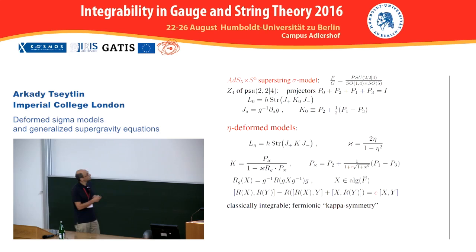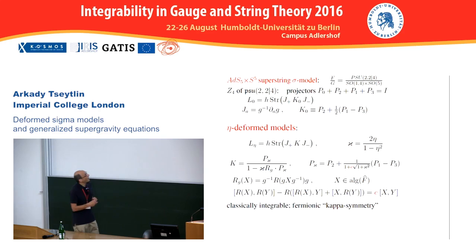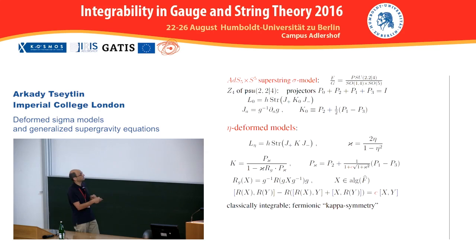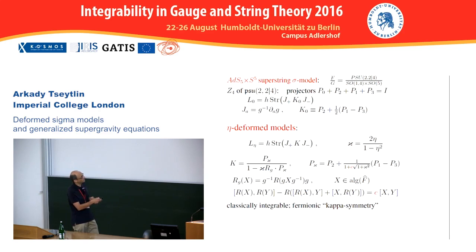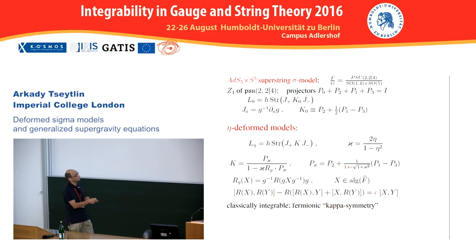Switching now to the super case, the basic example of the AdS5×S5 supercoset model is based on this supercoset with a standard Z4 decomposition: four projectors on the group G, on the coset, and P1 and P3 are fermionic subspaces. The Green-Schwarz action for AdS5×S5 has this structure with K0 being a combination of projectors. The eta-deformed models are defined by essentially modifying this K in a certain prescribed way, with a new P_kappa projector which is a combination of P2 and P1, P3 with certain coefficients depending on the deformation parameter.